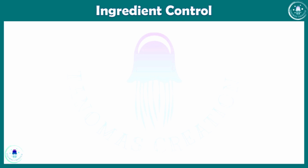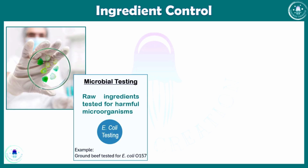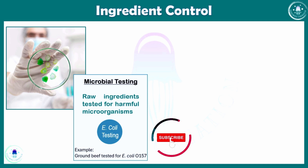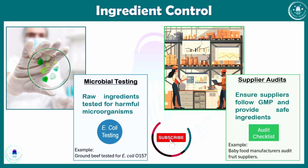Moving to ingredient control — the first component is microbial testing. Raw ingredients are tested to ensure they are free of harmful microorganisms. For example, E. coli testing is done on ground beef before the food is made and before delivery, as it is an important cause of foodborne diseases.